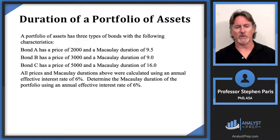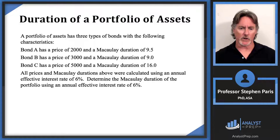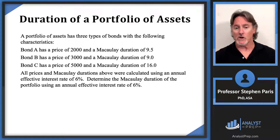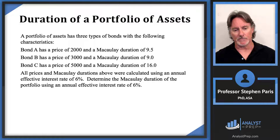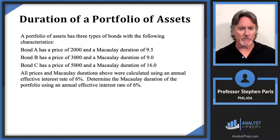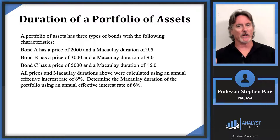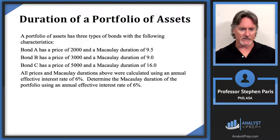In this specific example, our portfolio has three types of bonds. Bond A has a price of 2,000 and a Macaulay duration of 9.5. Bond B has a price of 3,000 and a Macaulay duration of 9. Bond C has a price of 5,000 and a Macaulay duration of 16. All prices and Macaulay durations are at the same interest rate — in this case, 6% — so we're comparing apples to apples.